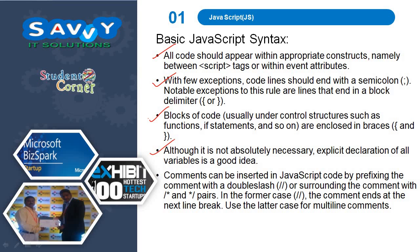Although it is not absolutely necessary, explicit declaration of all variables is a good idea. Comments can be inserted in JavaScript code by prefixing the comment with a double slash, or surrounding the comment with slash-star and star-slash. In the former case, the comment ends at the next line break. Use the latter case for multi-line comments.